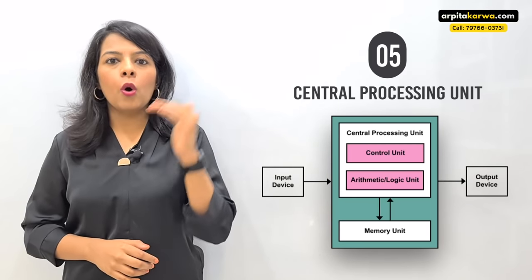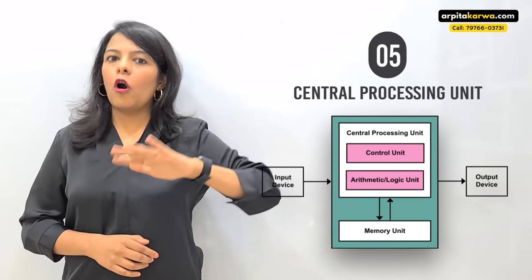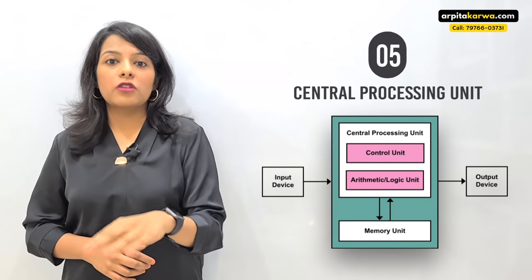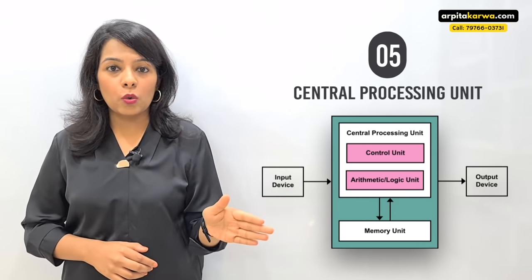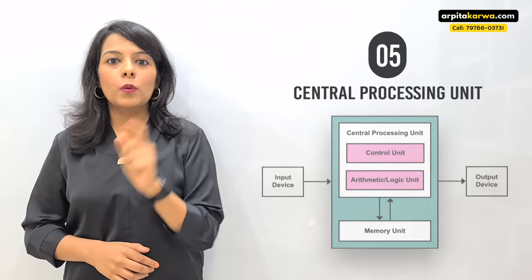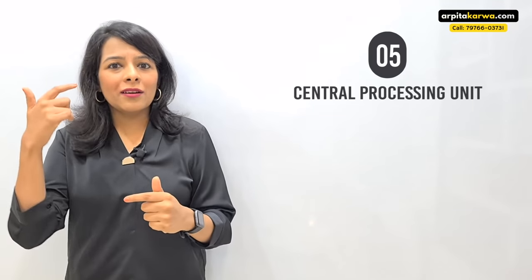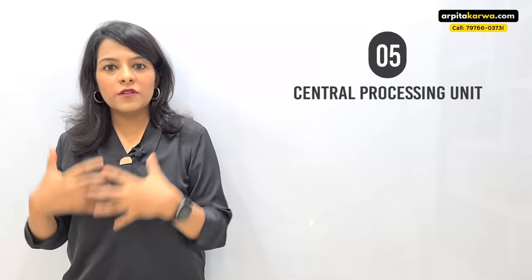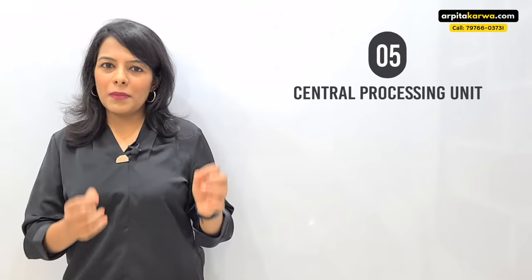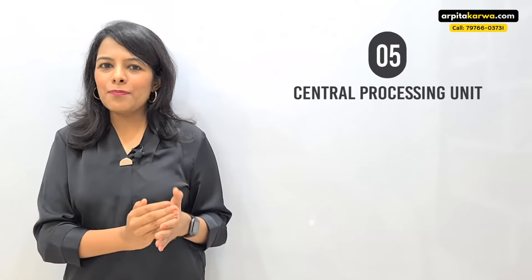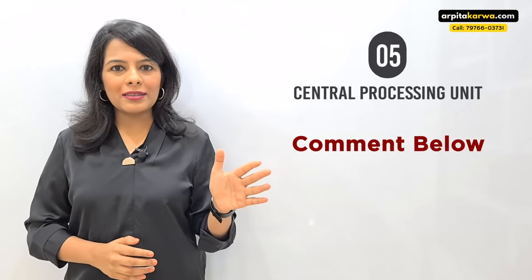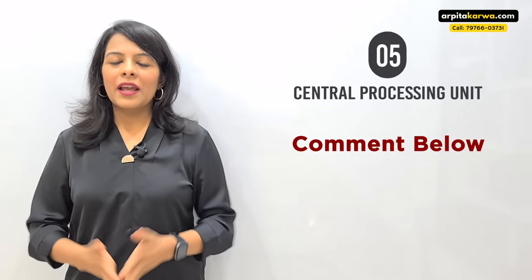These are the two sections of the CPU, each dealing with different types of work. As homework, I would like you to comment below what the functions of the CU and ALU are. By researching and gathering information from different sources, you will be able to strengthen your knowledge on this subject. Make sure you do your research and put your answers in the comments.